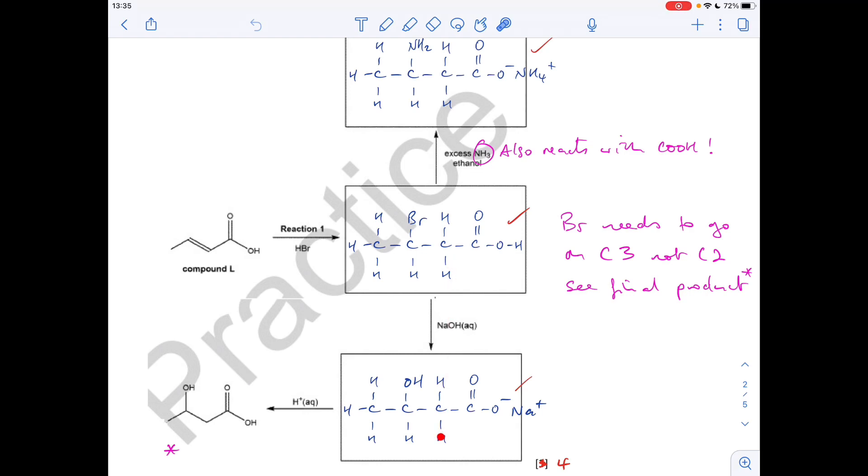If you react that with sodium hydroxide, we're going to get a substitution of the Br for the OH. But we'll also get sodium hydroxide will create a salt at this end. So we'll get the COO minus, Na plus salt at that end there.